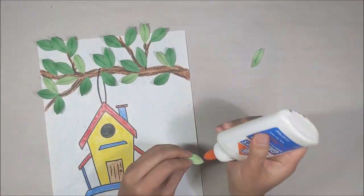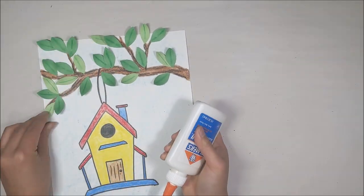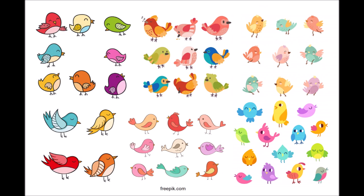The last step is adding your bird onto the birdhouse. Here are some examples of birds. You can always use one of these or make your own.